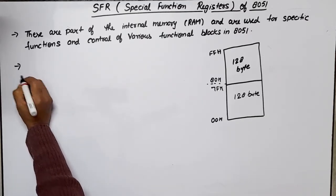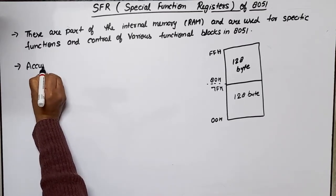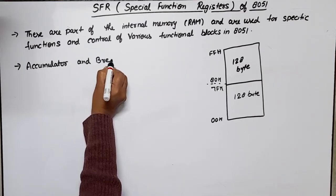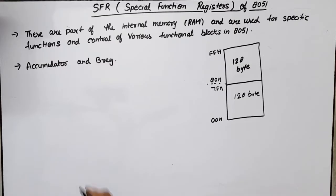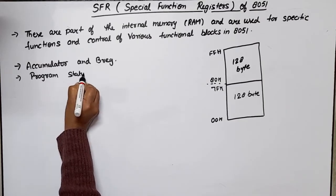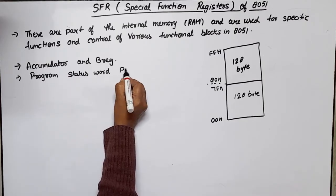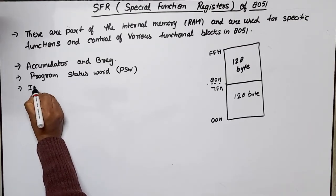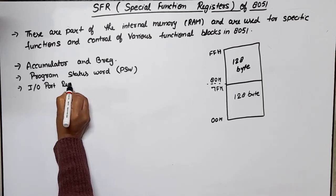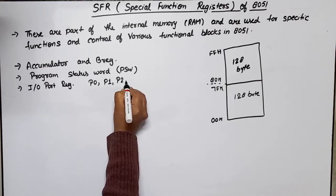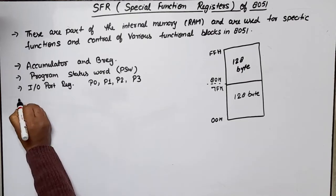We will now discuss each SFR one by one. First is the Accumulator and B register. Second is the Program Status Word, also called PSW — a link will be in the description box. Next is the Input/Output Port registers — we have four ports, so there are four registers: Port 0, Port 1, Port 2, and Port 3.